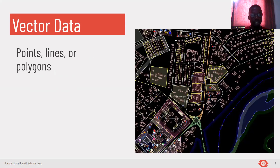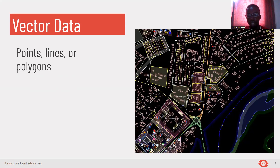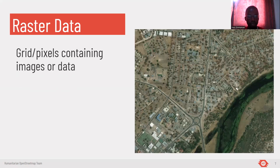Here you have the vector data, which are points, lines, and polygons. This is an OSM data layer, and you have buildings, lines, and all the different information that you have mapped. The next slide shows the same image but as a raster layer.